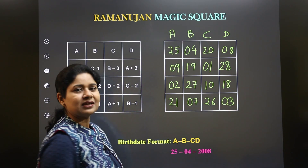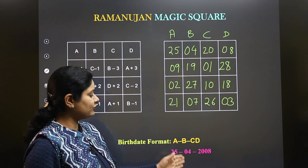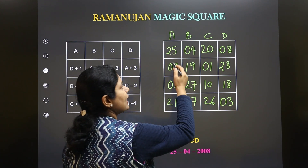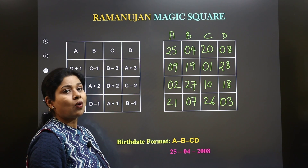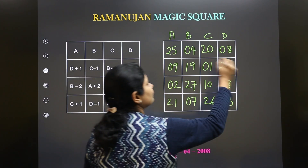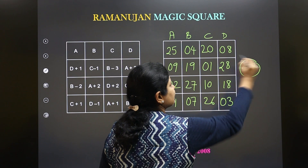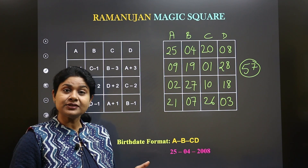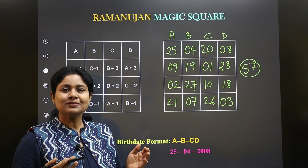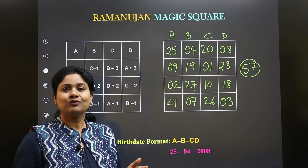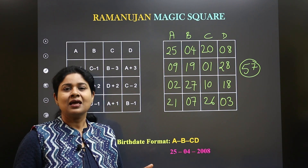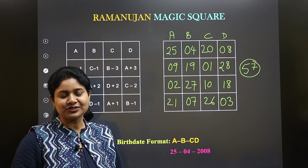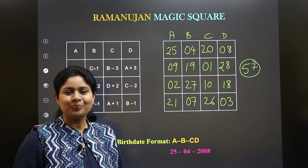So we have created a magic square for the date 25th April 2008. If you want to check whether this is a magic square, go ahead and add all the numbers in any row, column, or diagonal — you will find the total is 57. You can create it for your own birthday, or make a special magic square for your friends, siblings, parents, aunts and uncles, and gift it to them for their birthdays, anniversaries, or any special day. Hope you liked it.